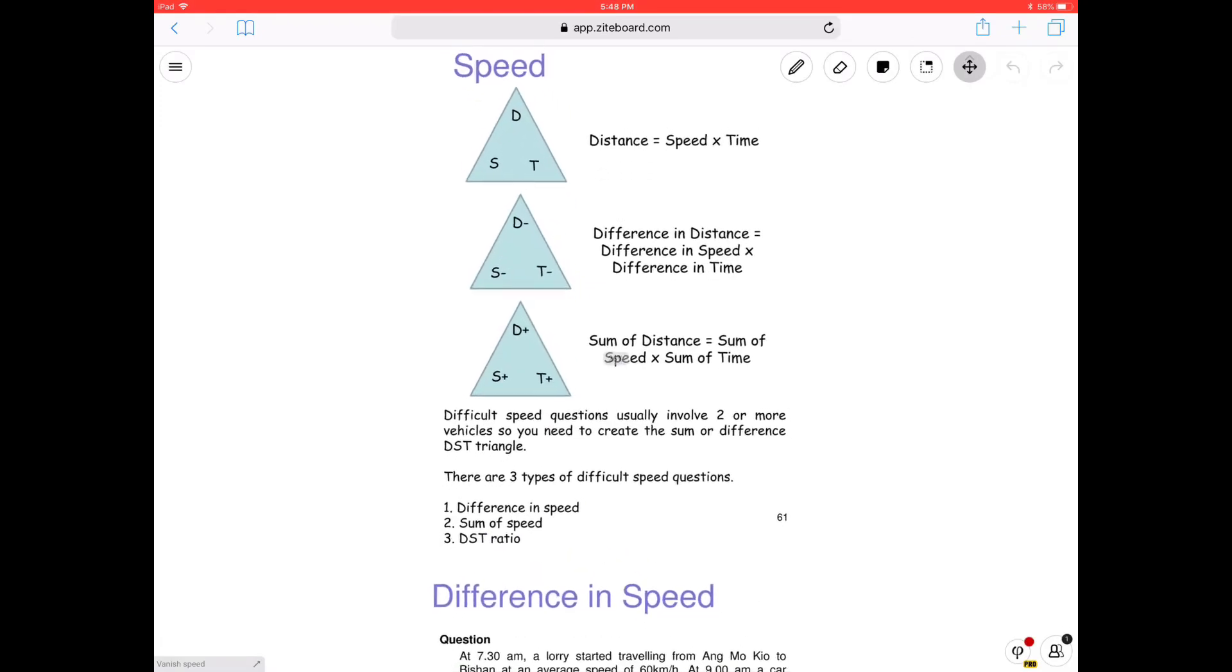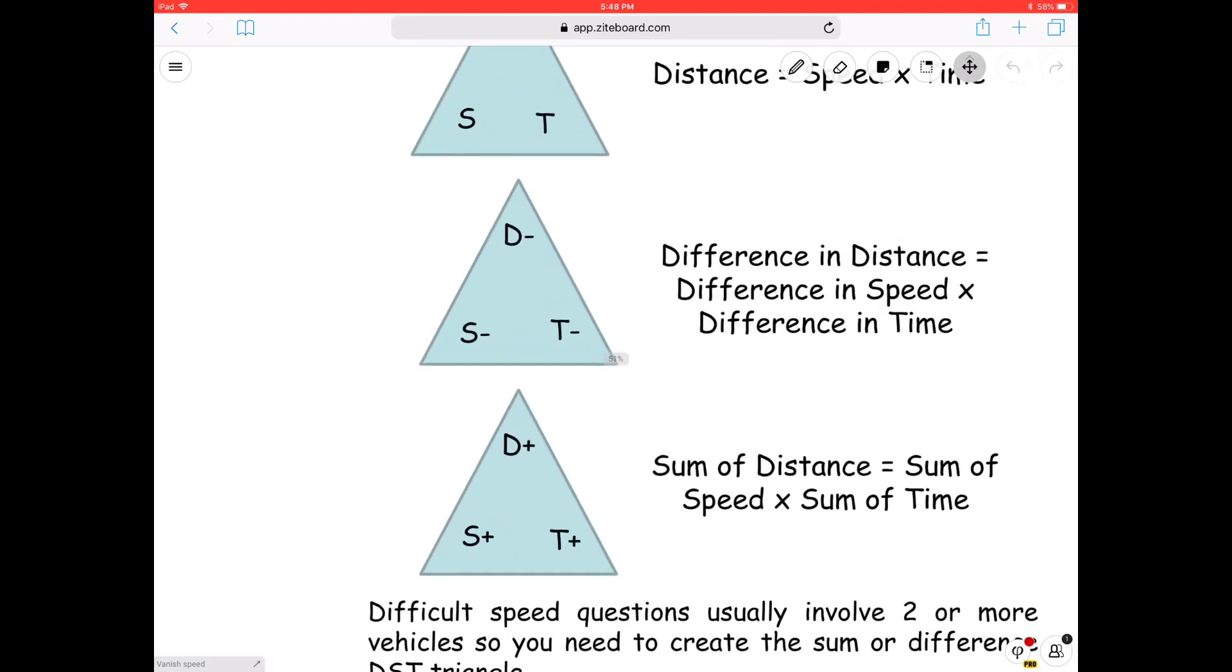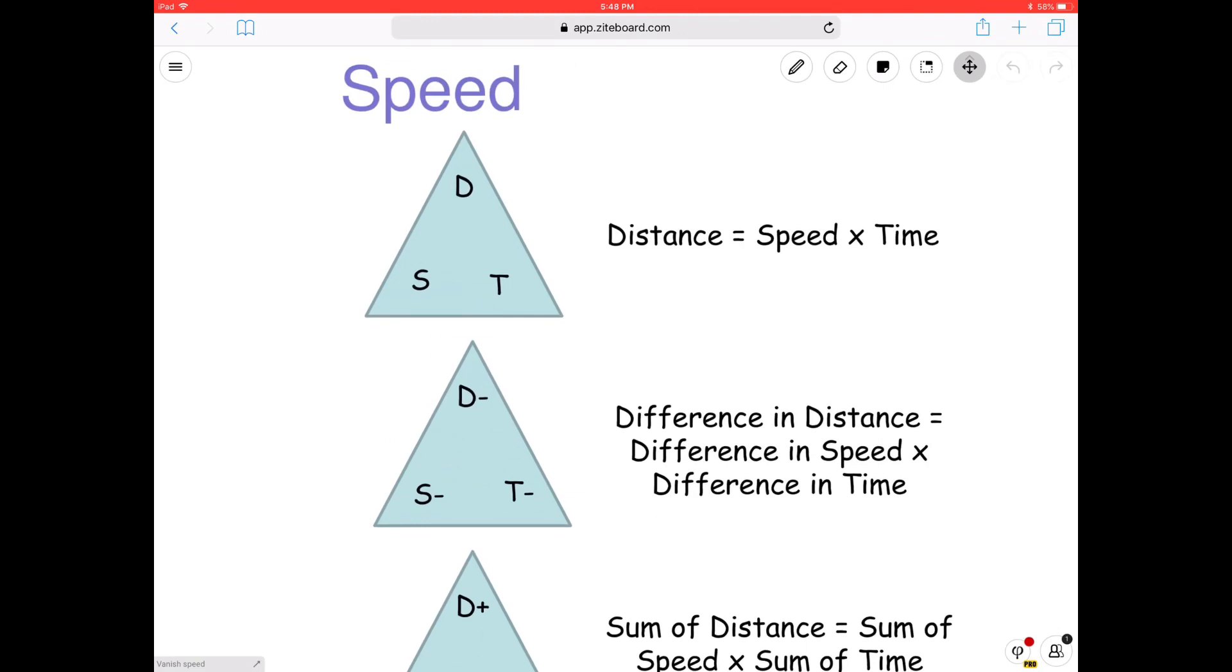This is speed. Okay, so this is a normal speed that you know. Do you see this? The DST triangle, right? Normal speed. Distance equal to speed times time. So all you have to do is, if you want to find distance, you take speed times time.